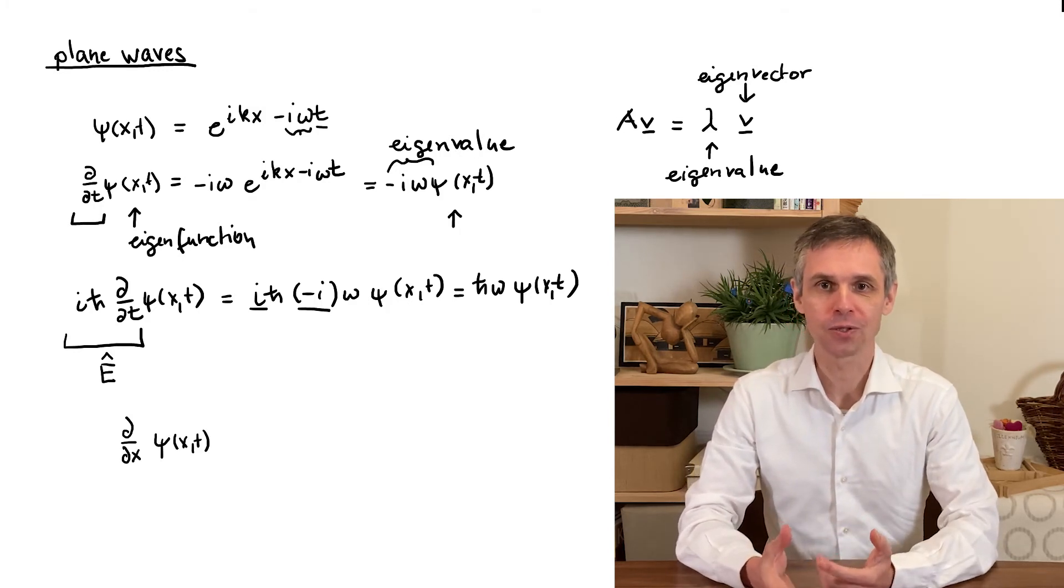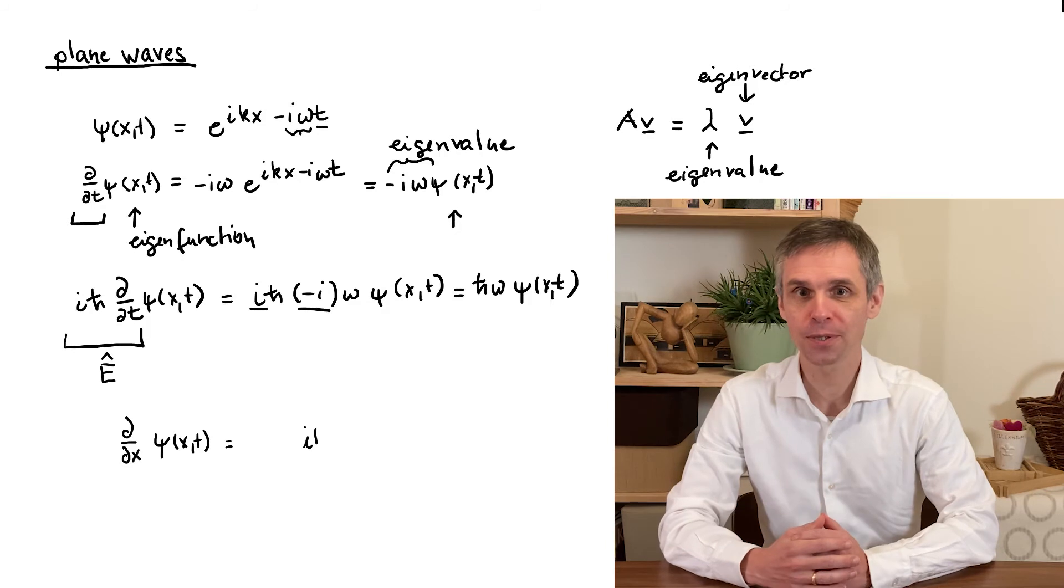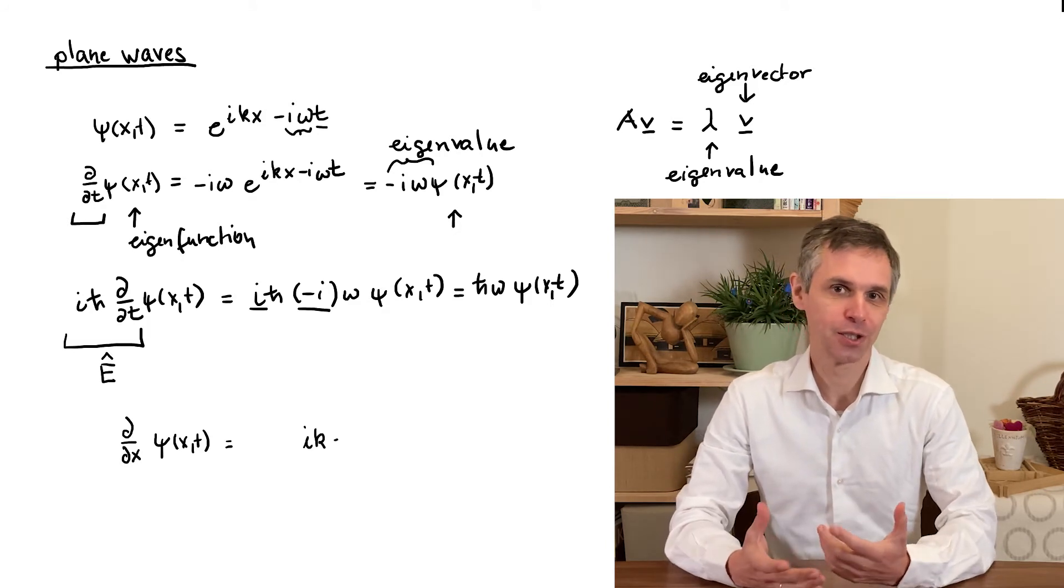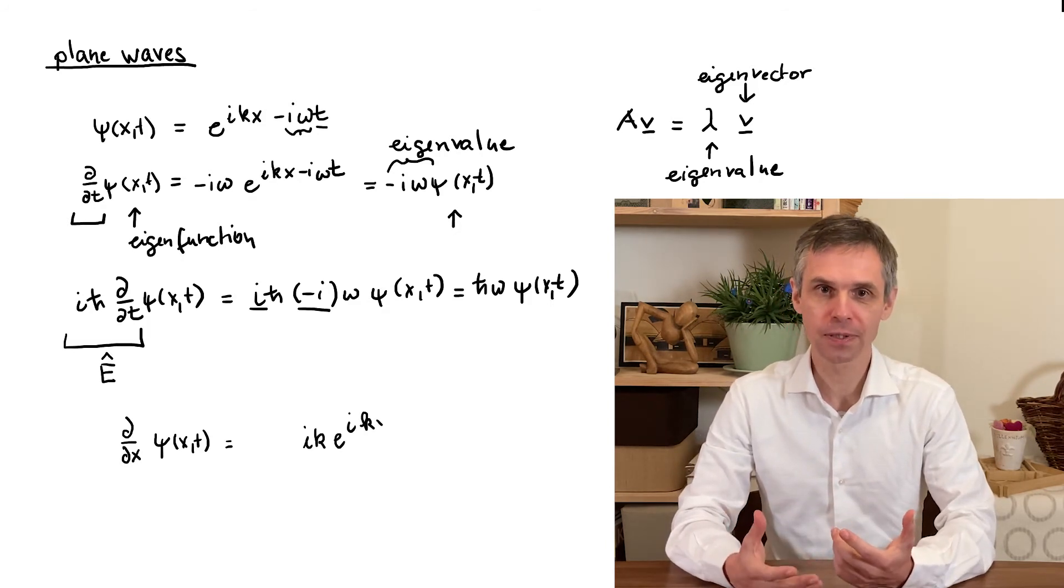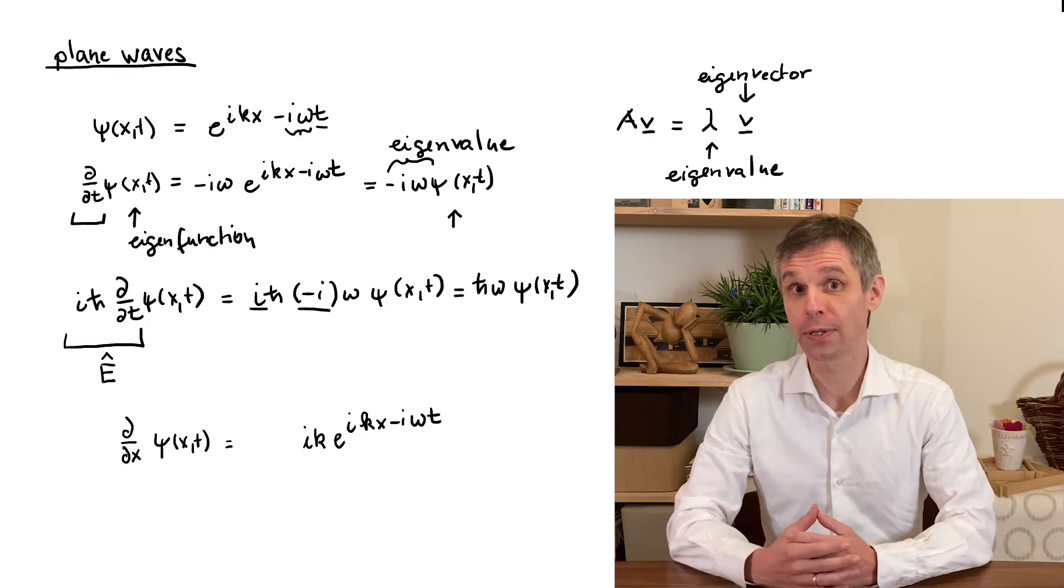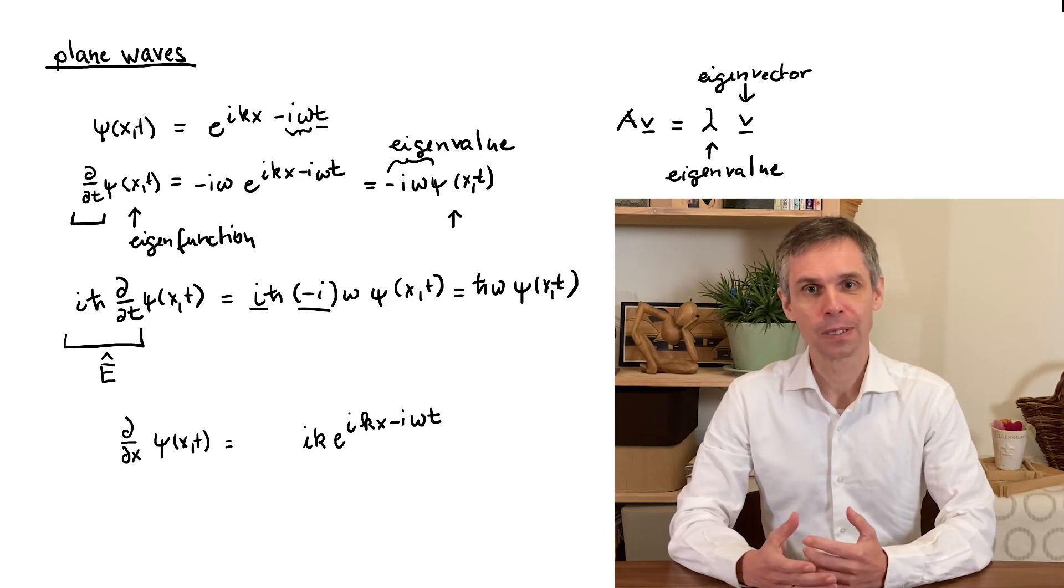Applying the chain rule again we will now extract the factor ik in front of the wave function which does not again change when we then take the derivative of the exponential function with respect to its generic argument.